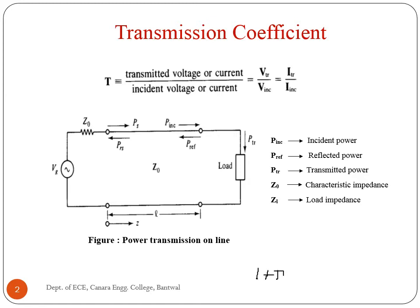The figure shows the transmission of power along a transmission line, where P_inc is the incident power, P_ref is the reflected power, P_tr is the transmitted power, Z0 is the characteristic impedance, and Z_L is the load impedance.